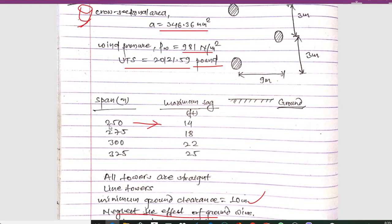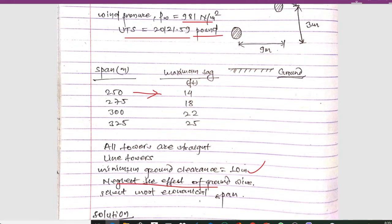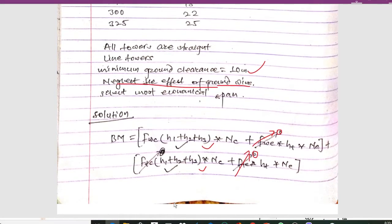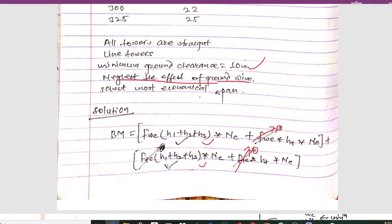The span and respective maximum sag values are given in a table. In this question, all towers are straight line towers, minimum ground clearance is given as 10 meters, and we have to neglect the effect of ground wires. We need to select the most economical span. Since we neglect ground wires, the bending moment is calculated using the relevant formula.